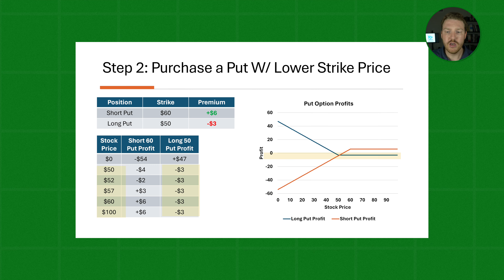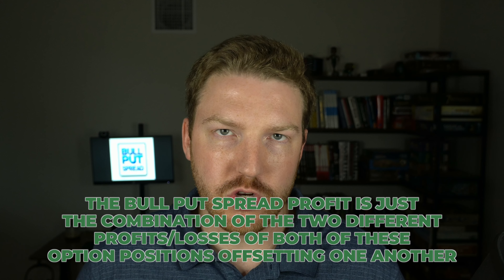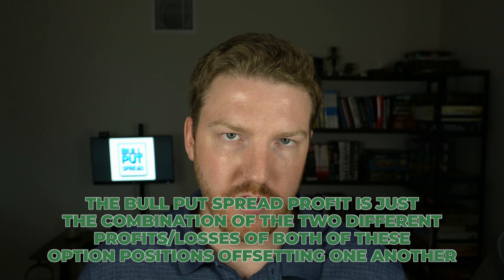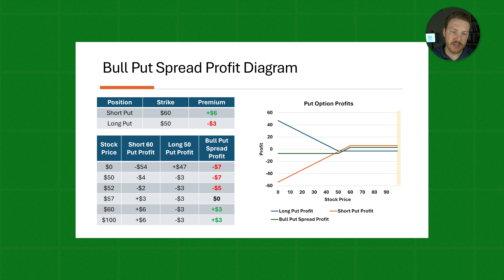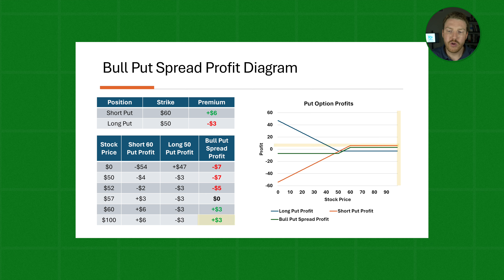The bull put spread profit is just the combination of the two different profits or losses of both option positions offsetting one another. Looking at the bottom table's rightmost column, we can see our bull put spread profit. If the stock price is $100, we initially received $6 from selling the higher strike price put, but we paid $3 to go long on the lower strike price put, so we are up $3. We are actually up $3 all the way until the stock price hits $60.